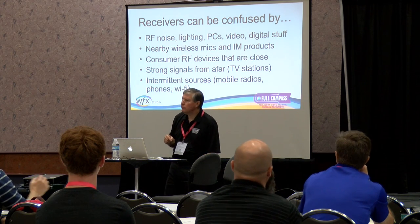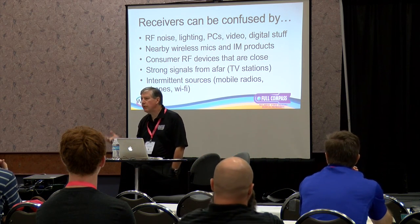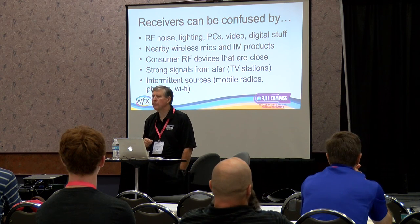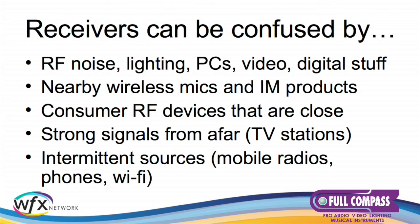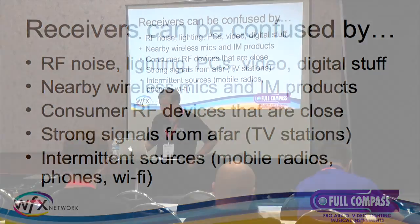Receivers can be confused by a lot of things that aren't radios. We usually think of interference as coming from TV stations and two-way radios, but a lot of consumer devices that are wireless use radio frequencies. When you're identifying this noise field, you're going to find a lot of stuff nearby that you wouldn't have thought of as obvious. Certainly TV stations are an issue — strong signals from afar, megawatts of effective radiated power coming from transmitters that are very predictable. We know exactly where they are; you can look out on the horizon and see those antennas.